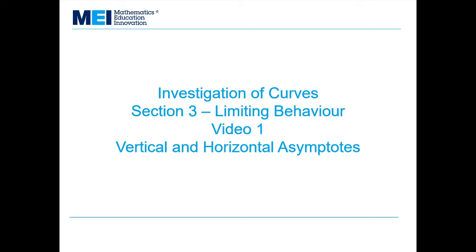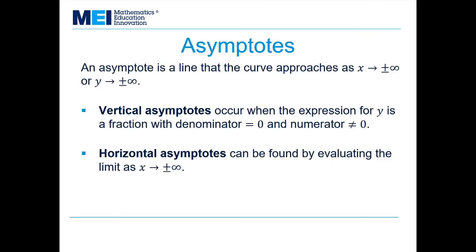Investigation of curves, section 3, limiting behaviour. Video 1: vertical and horizontal asymptotes. An asymptote is a line that the curve approaches as x tends to plus or minus infinity, or y tends to plus or minus infinity.